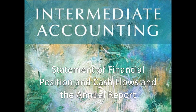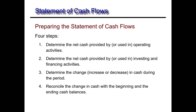In this video we're going to look at the process of preparing a statement of cash flows. Let's first talk about the four basic steps involved. The first is to look at the operating activity section, which can be created using one of two methods: the direct method or the indirect method. This discussion is going to focus mainly on the indirect method.